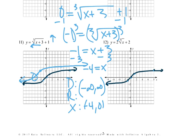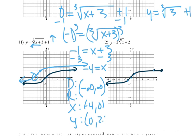For the y-intercept of number 11, make x = 0. Cube root of (0+3) = ∛3, plus 1. Using a calculator, ∛3 ≈ 1.44, so 1.44 + 1 = 2.44. Y-intercept is approximately (0, 2.44).